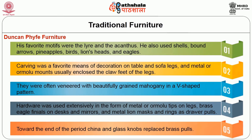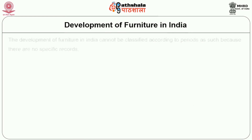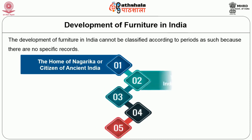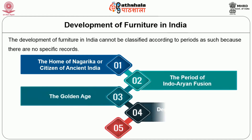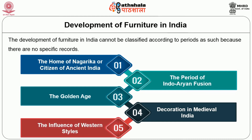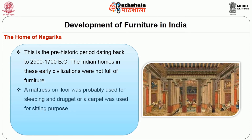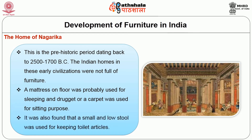So far I have been talking about furniture styles followed in western countries. Now I would like to enlighten you briefly on furniture styles adopted in India. The development of furniture in India cannot be classified according to periods as such because there are no specific records. Broadly, we can divide the development of furniture in India into the following major categories: the home of the Nagarika or citizen of ancient India, the period of Indo-Aryan fusion, the golden age, decoration in medieval India, and the influence of western style. The home of the Nagarika is a prehistoric period dating back to 2500 to 1700 BC. Indian homes in these early civilizations were not full of furniture; a mattress on the floor was probably used for sleeping, and a rug or carpet was used for sitting. It was also found that a small and low stool was used for keeping toilet articles.